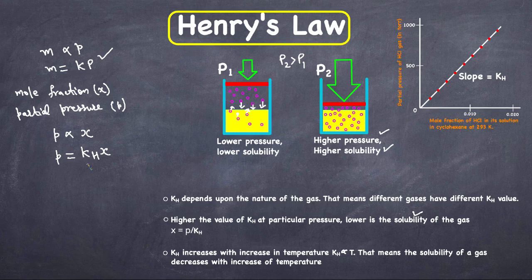So p is proportional to x, or it can be written as p = kH · x, where kH is Henry's Law constant. This constant depends on the nature of the gas, meaning different gases have different kH values.